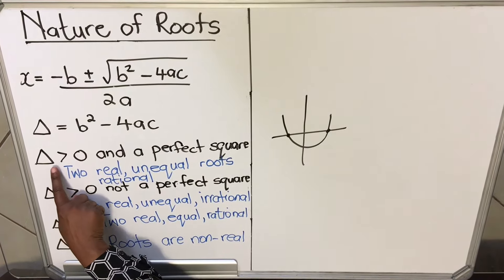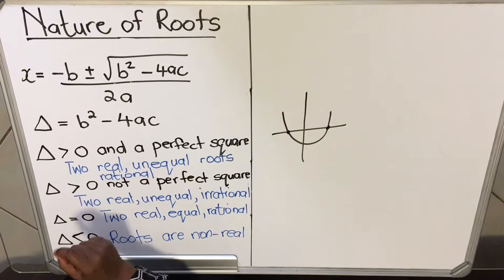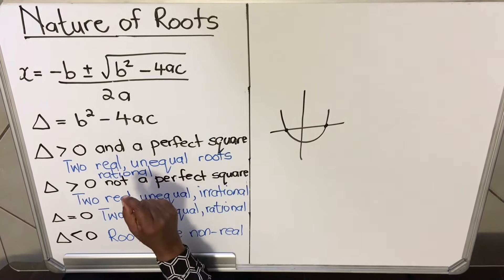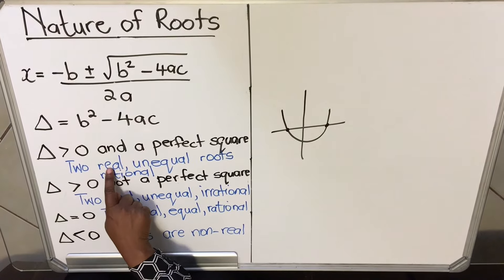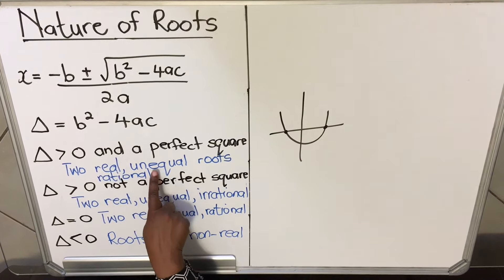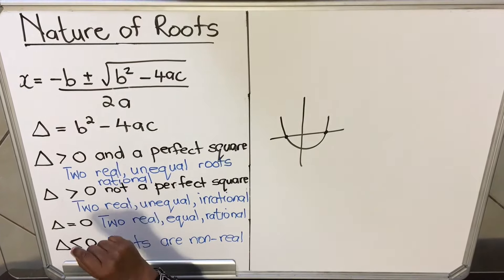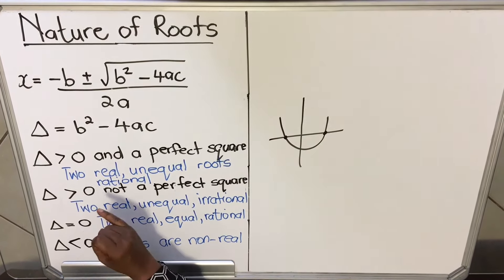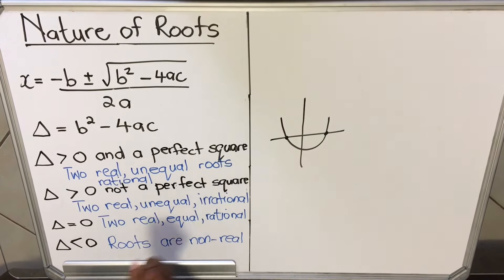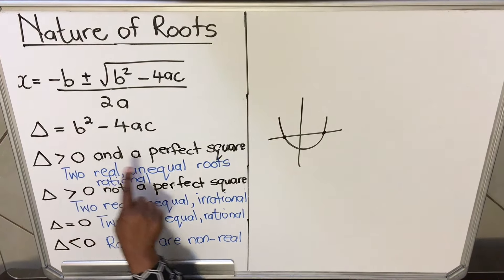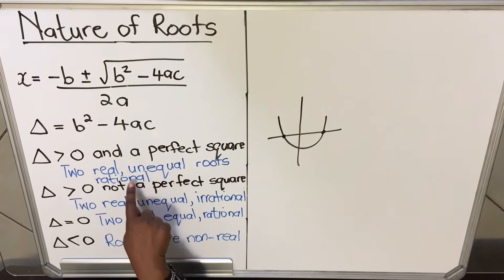When Δ = b² − 4ac is greater than zero — meaning positive — and the number is a perfect square (for example 4 or 16), you will have two real roots. They will be unequal and rational. Rational numbers are ones that either have a terminating decimal or a repeating decimal. So when your delta is positive and a perfect square, your roots are two, real, unequal, and rational.